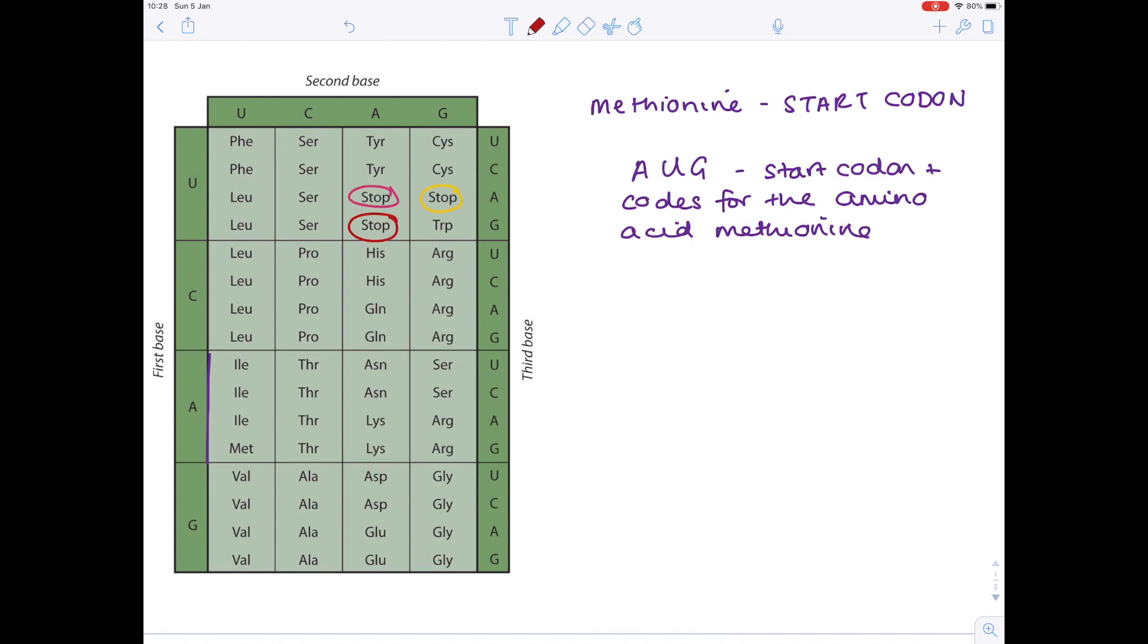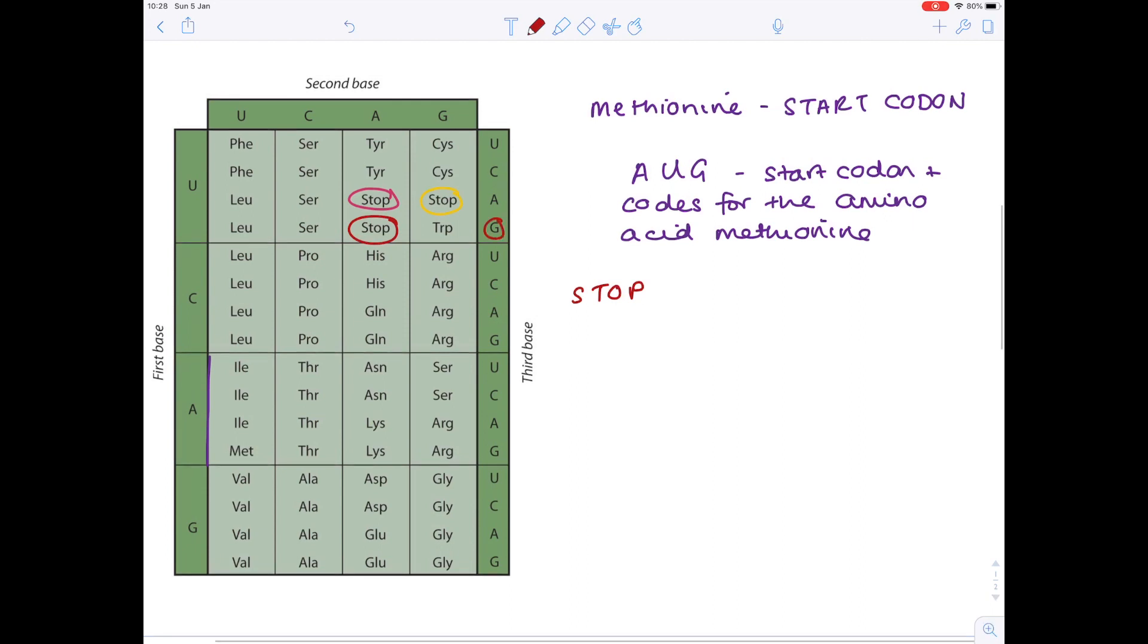So what bases are responsible for producing a stop codon? Well, we can do the same thing again. So how do we produce the red circled stop? Well, we reverse our steps. So we can see that it's a G. We can see that there's an A. And then lastly, we can see that U was involved. So the stop codon for red is UAG.